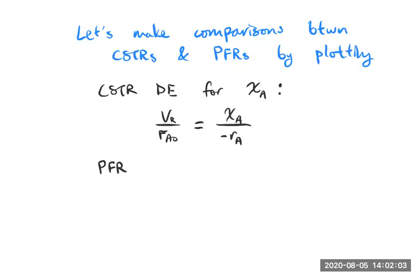And then we'll write the PFR design equation that had to do with conversion. This is why we don't only want the one that has the residence time format. This conversion format might be useful to us. In that case, we had a dV_R, so I'll have F_A naught on the left-hand side, and here we have dX_A over minus r_A.